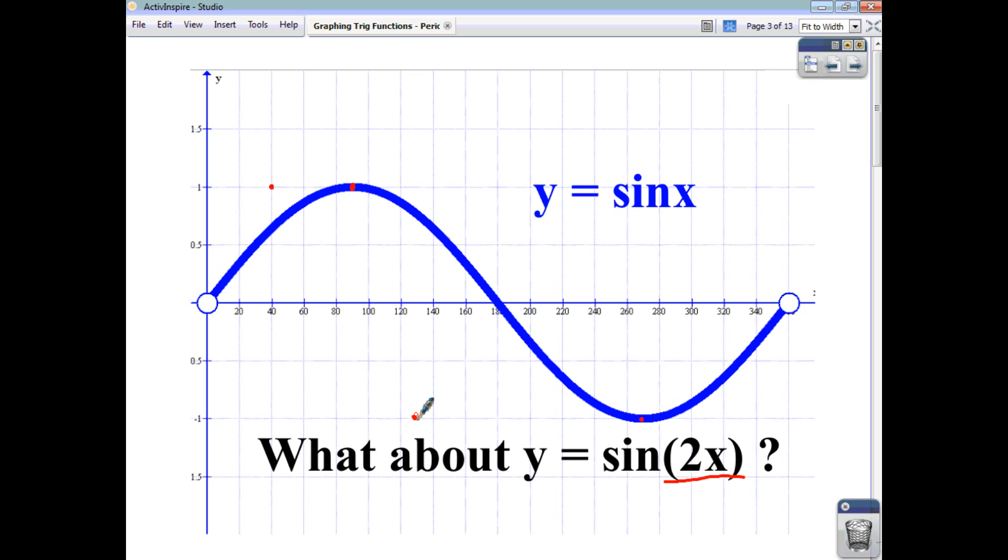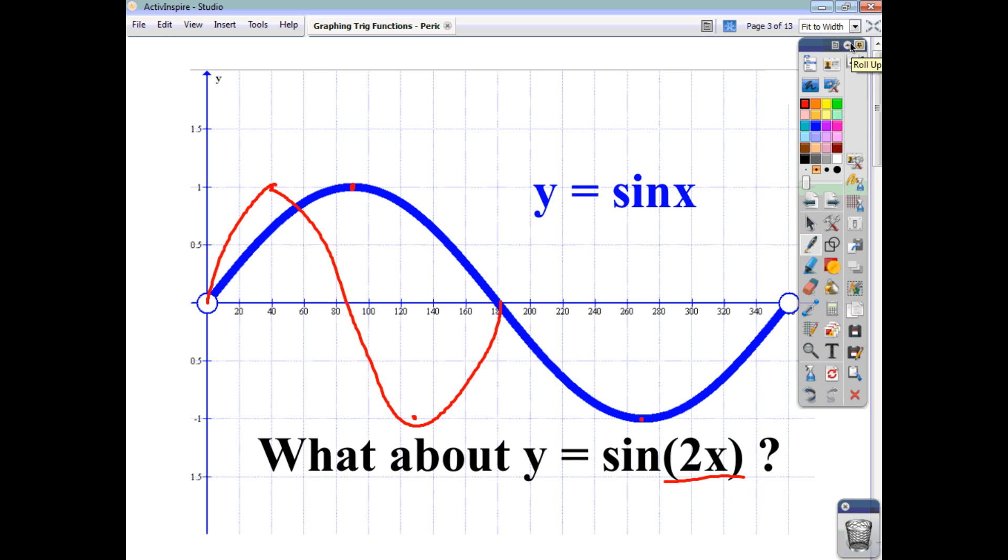So what happens, in effect, is that your cycle is much reduced. So you end up with something that looks like that. Now let's look at it properly.